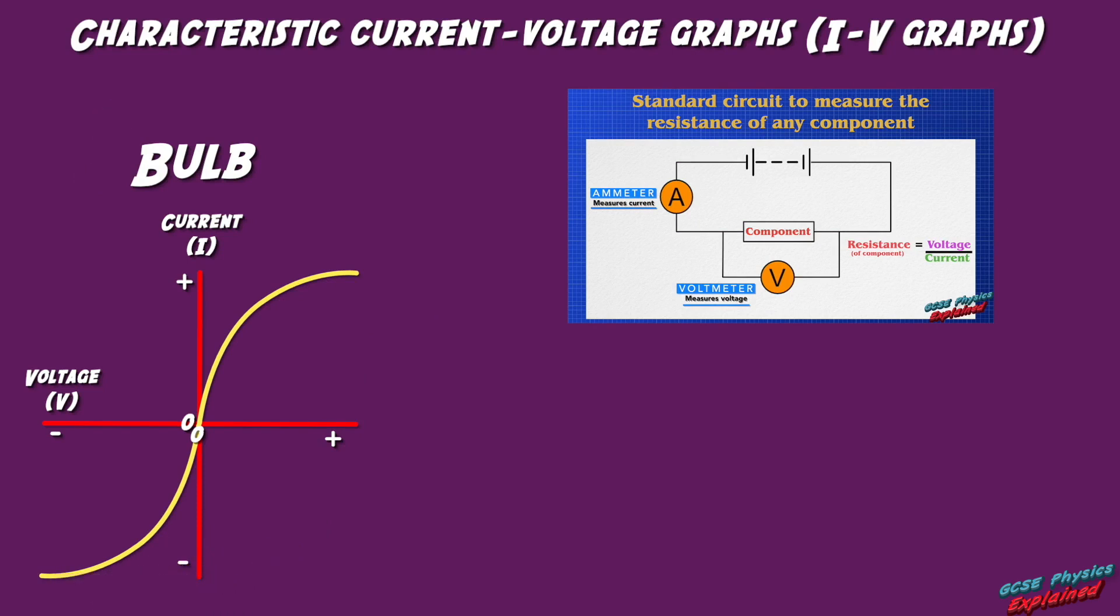Mind, it's only an s-shape if the IV graph shows both the forward and reverse directions for current. Make sure you remember that, otherwise it's just a curve.